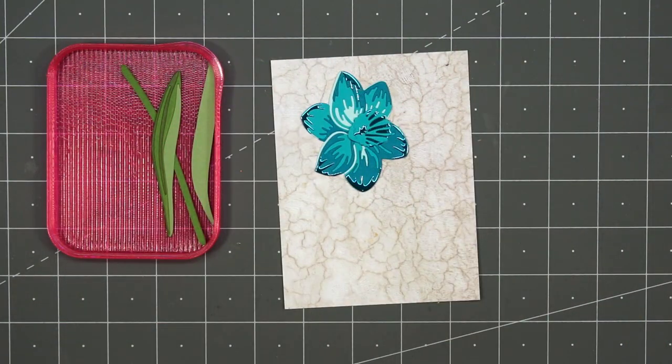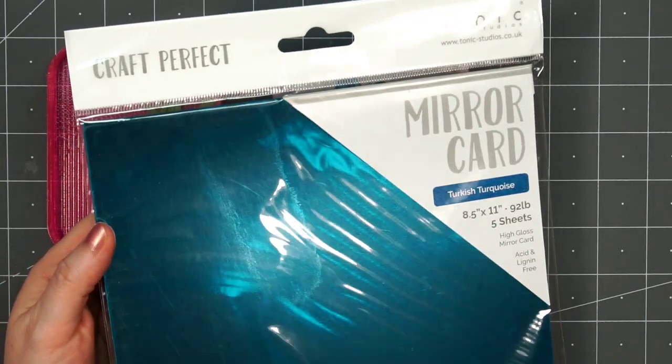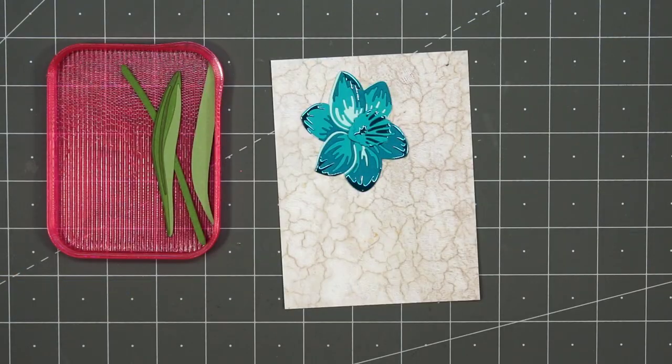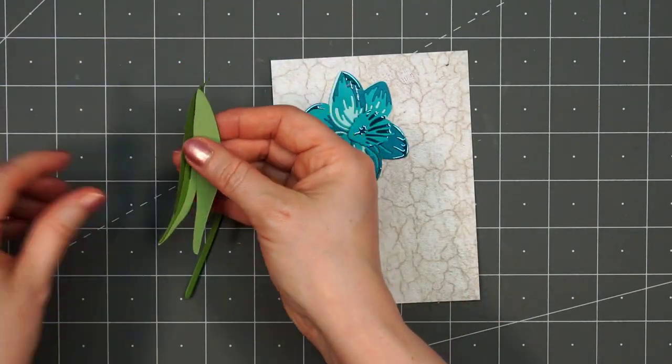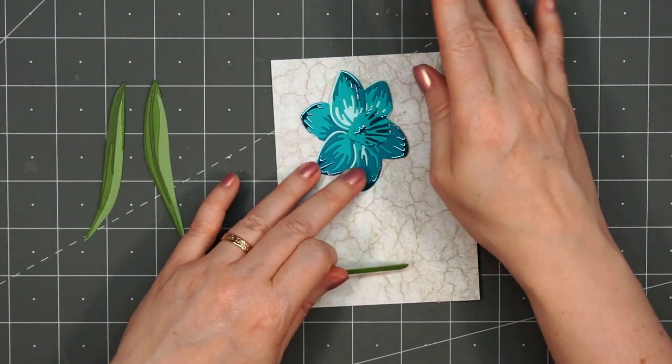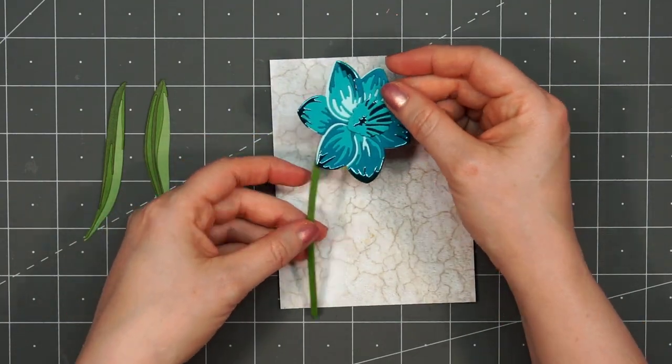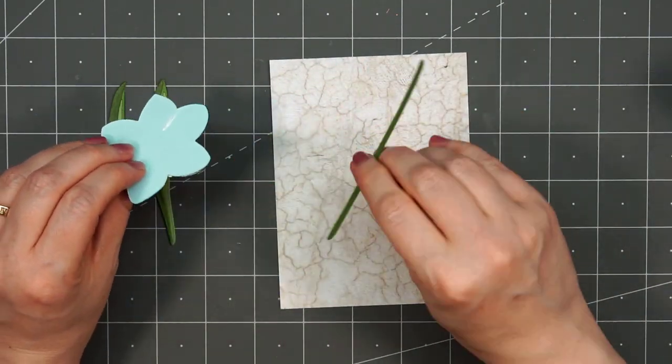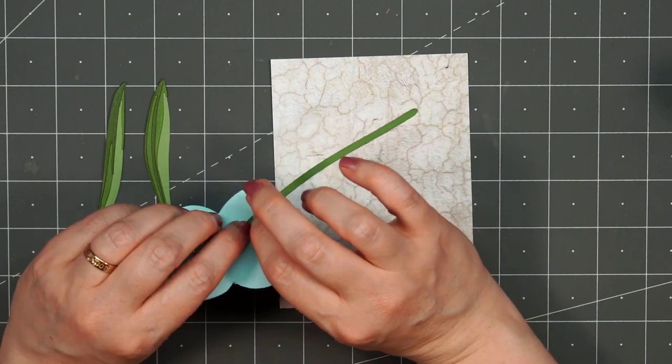I've already assembled the daffodils since you've watched me do it once, and not doing yellow this time, I decided to do more of a teal color. Instead of the glitter, I used some mirror cardstock from Tonic Studio. It adds a really lovely shine.